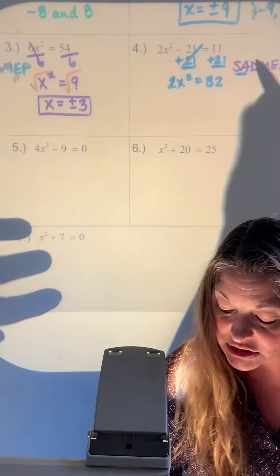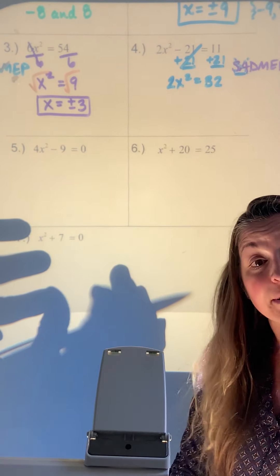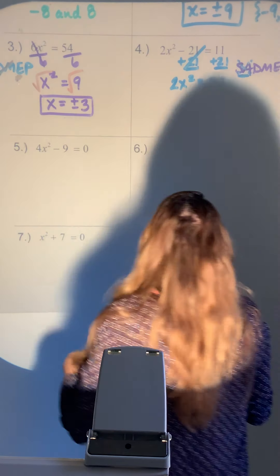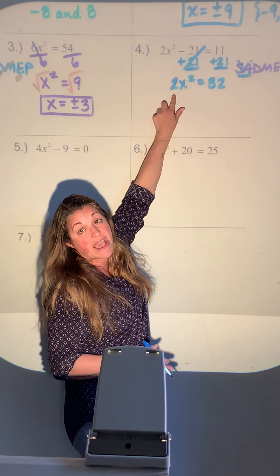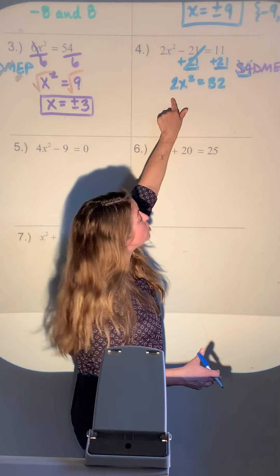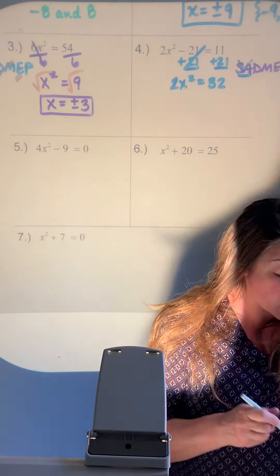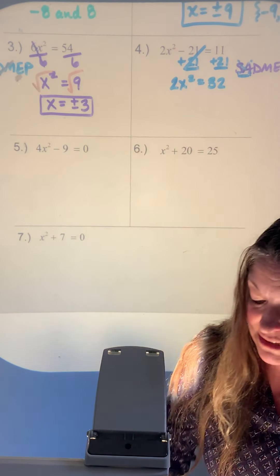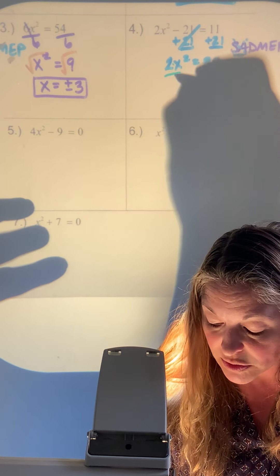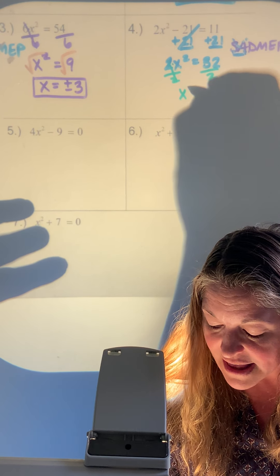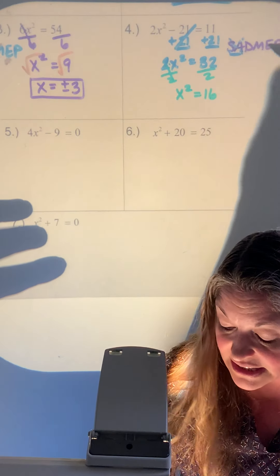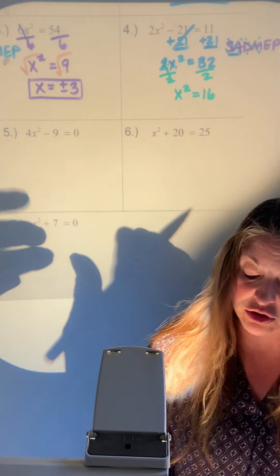Now done with that part. Check for anything to divide or multiply — we have this 2 as a coefficient, not to be confused with the exponent 2. The coefficient means 2 times whatever x squared is, so divide by 2. That gives x squared equals 16.